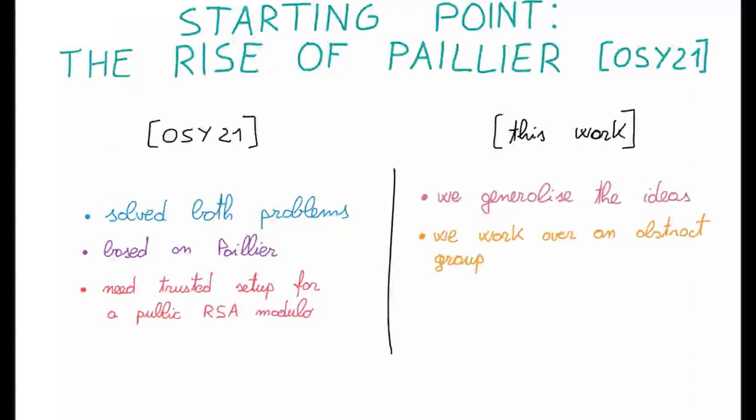In this work, we observe that the techniques of the rise of Paillier can be generalized. We don't need to work over the Paillier group anymore. We can work over an abstract framework, a group that satisfies some particular properties. One of these instantiations of this framework allows us to get rid of the trusted setups, and this instantiation is based on class groups.